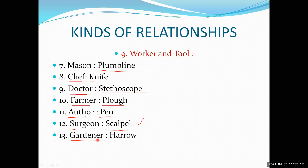Gardener uses a harrow — a tool used to trim and cut plants. Warrior uses a sword to fight a battle on the battlefield.